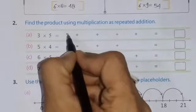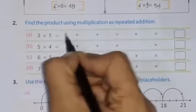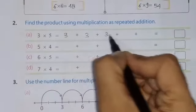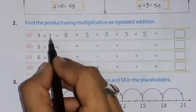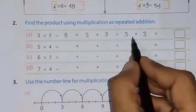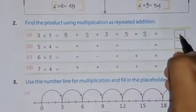So, we have to write 3, 3, 3, 3, 3. So, 3 how many times? 5 times. 1, 2, 3, 4, 5. And answer will be 15.